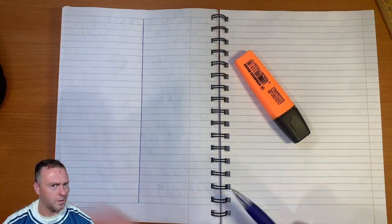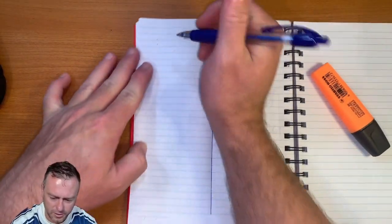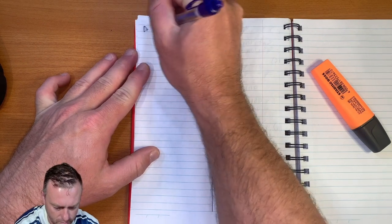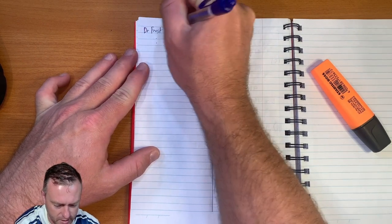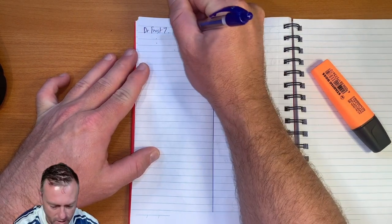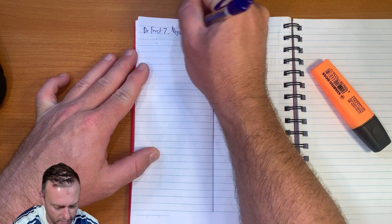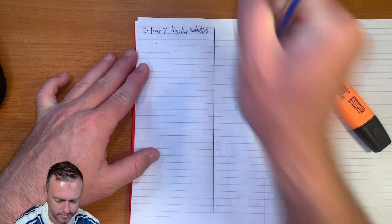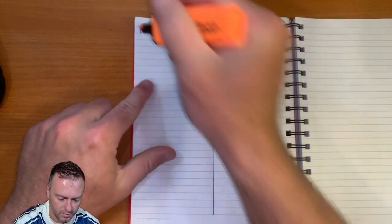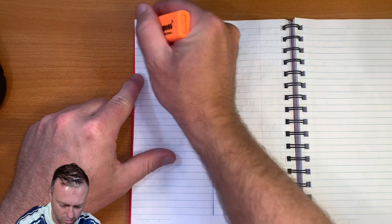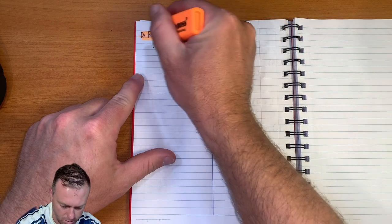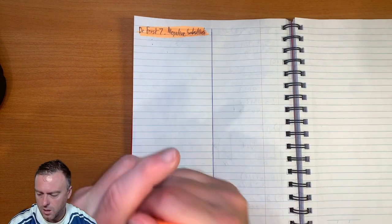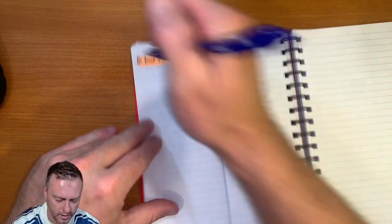So here we go. So this is Dr. Frost homework and this is the seventh one that we've done and we're going to call this the negative substitute. Give that a little highlight, like so. Good to go. Right, question one.